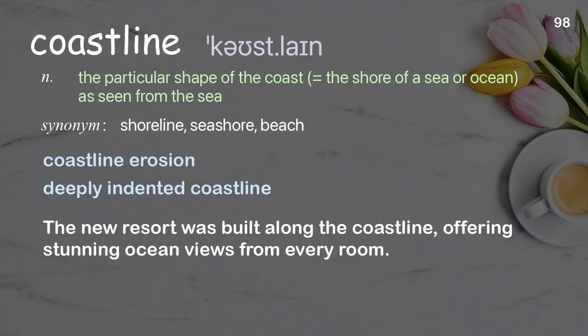Coastline. The particular shape of the coast; the shore of a sea or ocean as seen from the sea. Examples: Coastline erosion, deeply indented coastline. The new resort was built along the coastline, offering stunning ocean views from every room.